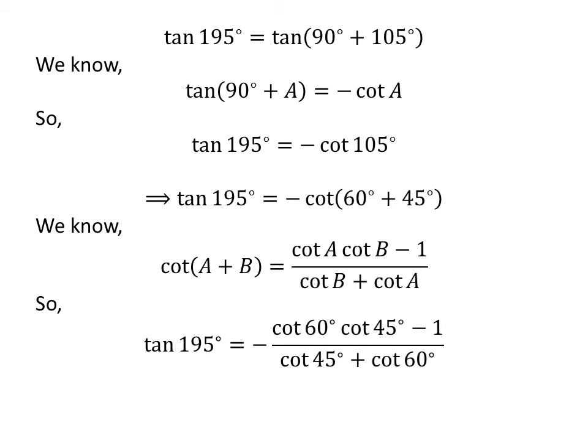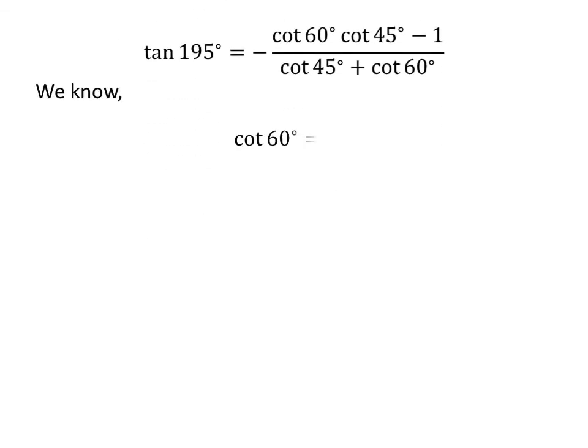Application of the above identity gives us: tangent of 195 degrees is equal to minus cotangent of 60 degrees times cotangent of 45 degrees minus 1, upon cotangent of 45 degrees plus cotangent of 60 degrees. As we know, cotangent of 60 degrees is equal to square root of 3 upon 3, and cotangent of 45 degrees is equal to 1. So, we plug in these values in the above expression.